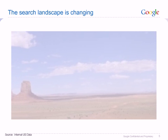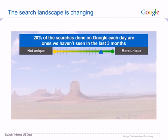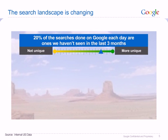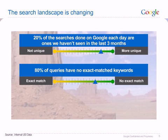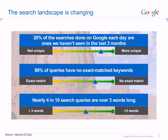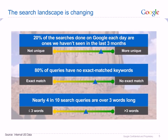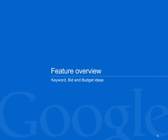What this says is that the search landscape is changing. 20% of the searches done on Google each day are ones we haven't seen in the last three months, and in some cases we've never seen them before. 80% of search queries do not match any AdWords advertisers' keywords exactly. And nearly four in 10 search queries are over three words long. So let's take a look at the three main features of the opportunities tab and how they can guide you in this changing search landscape.